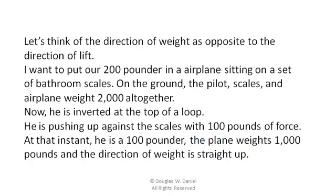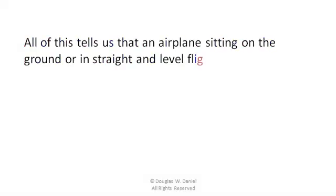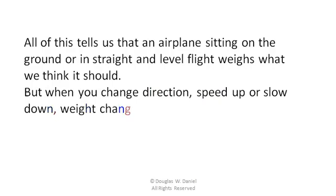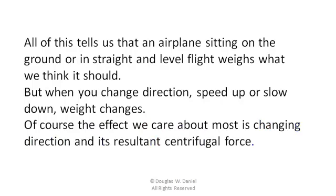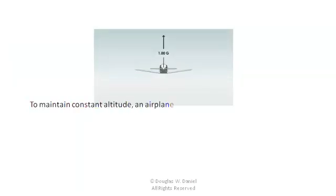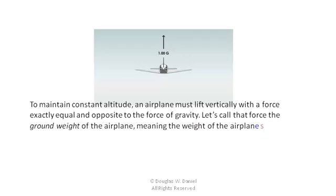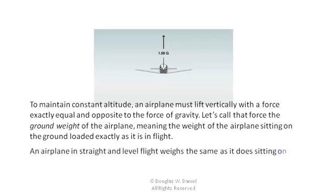The plane weighs 1,000 pounds, and the direction of weight is straight up. All of this tells us that an airplane sitting on the ground, or in straight and level flight, weighs what we think it should. But when you change direction, speed up or slow down, weight changes. The effect we care about most is changing direction and its resultant centrifugal force. To maintain constant altitude, an airplane must lift vertically with a force exactly equal to and opposite the force of gravity — let's call that the ground weight of the airplane, meaning the weight of the airplane sitting on the ground loaded exactly as it is in flight. An airplane in straight and level flight weighs the same as it does sitting on the ground: its ground weight.